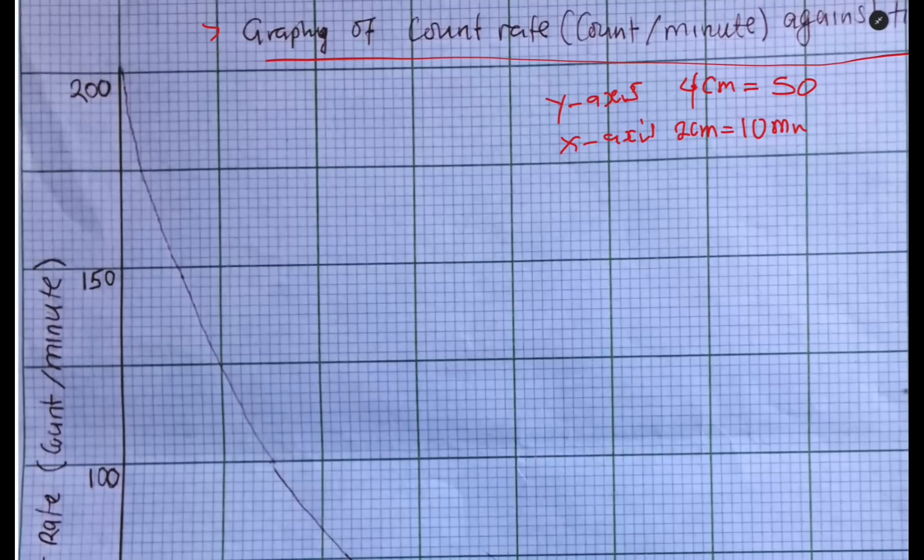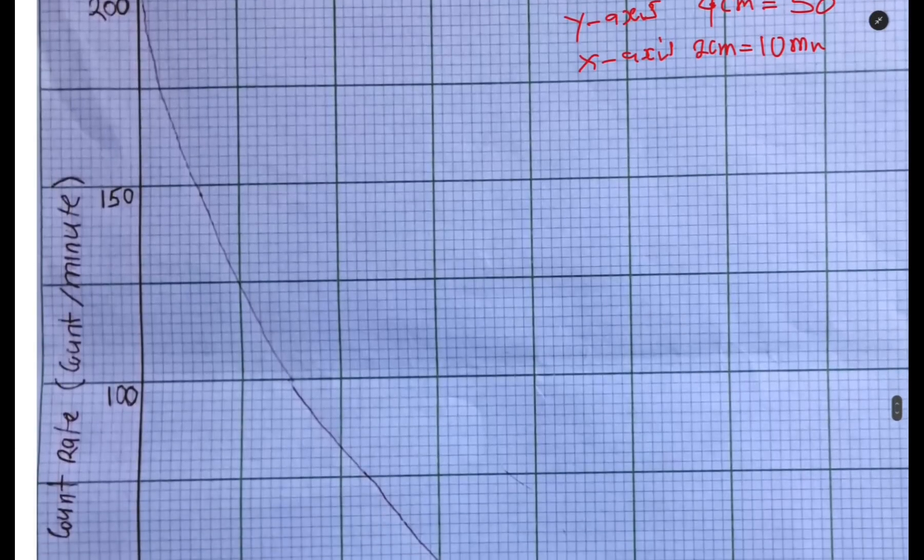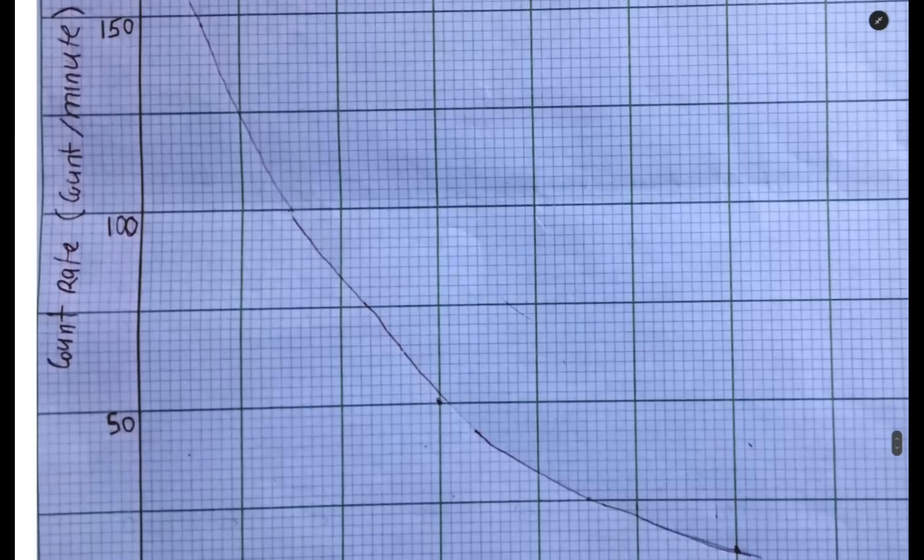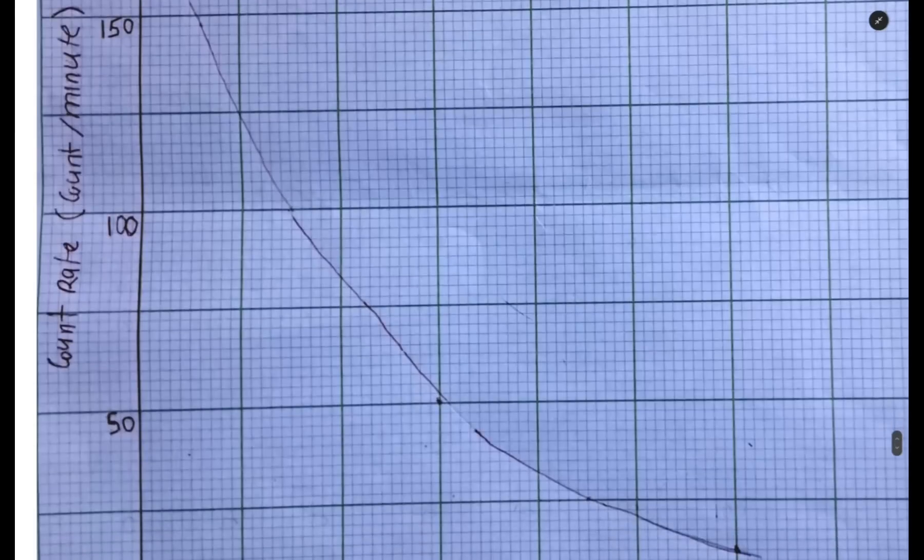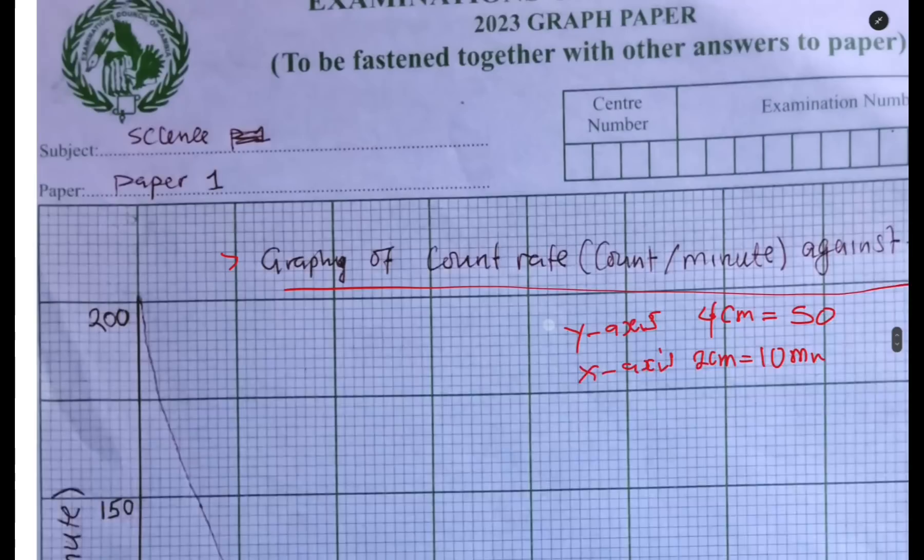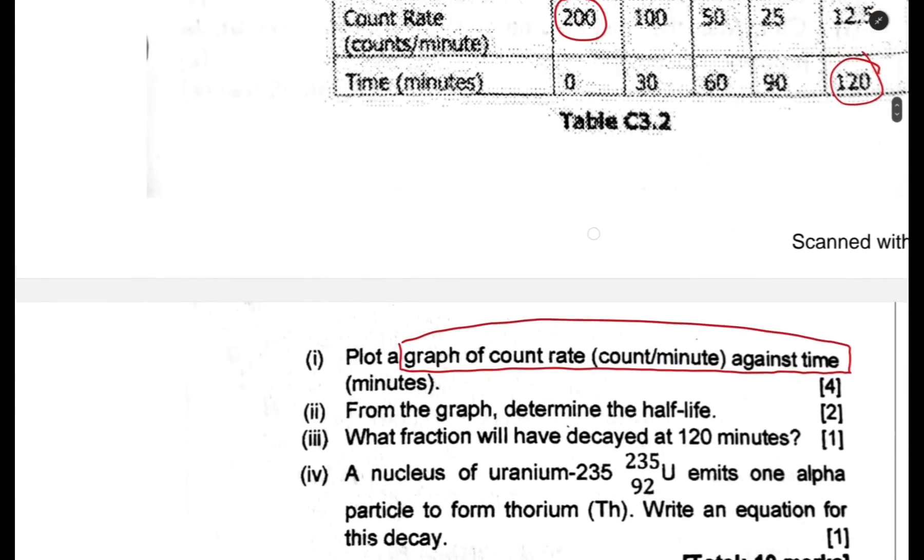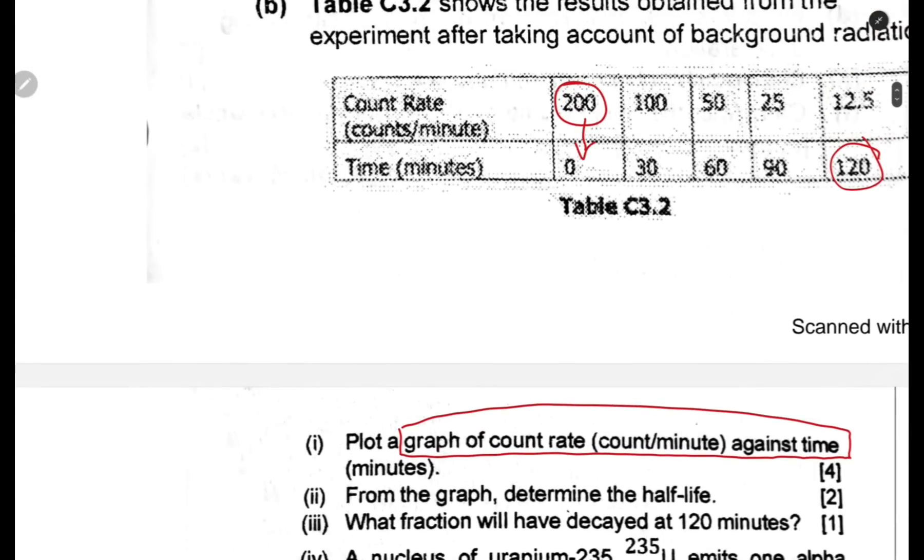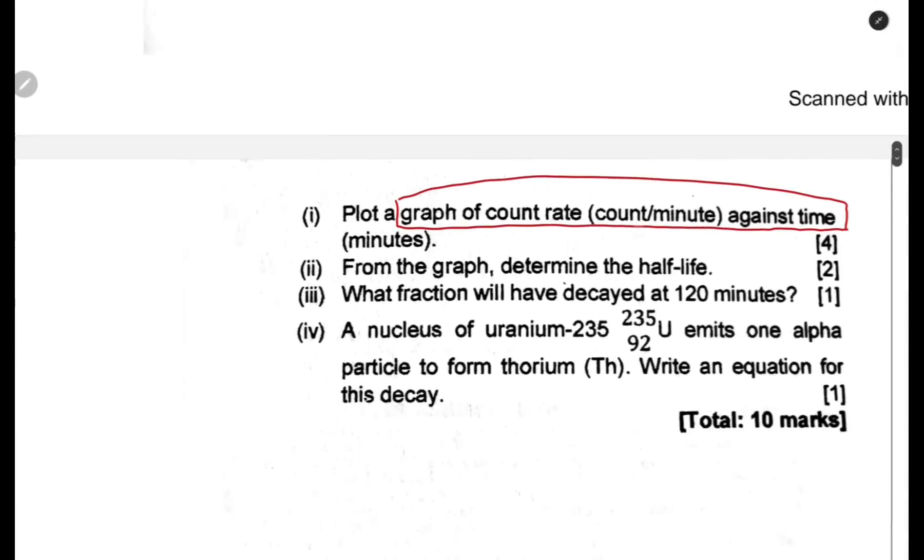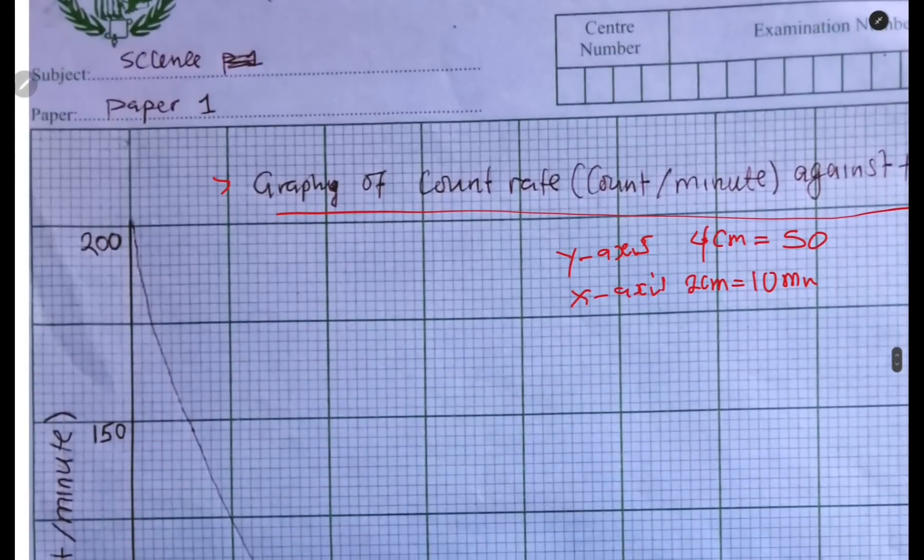Aside from writing a title and the scale, you need to make sure that your graph is large enough. Let us connect the points. The first one is going to be zero comma 200, that is 200 comma zero. Time zero, count 200. Count is on the y-axis, time on the x-axis. It's going to be right there.